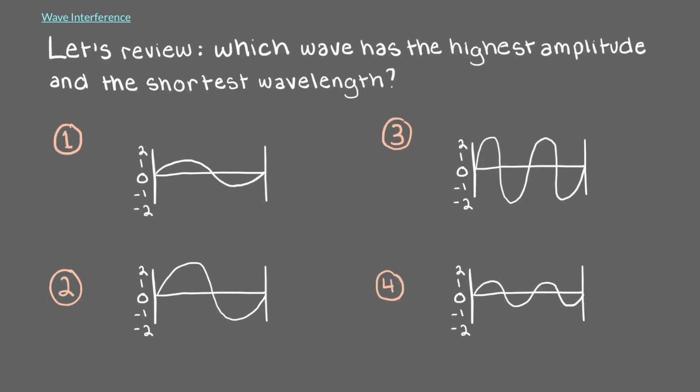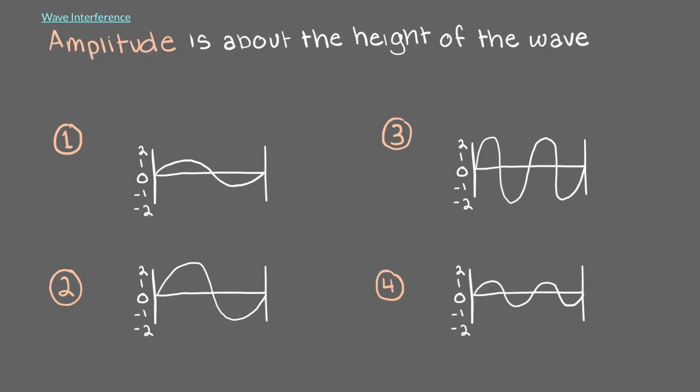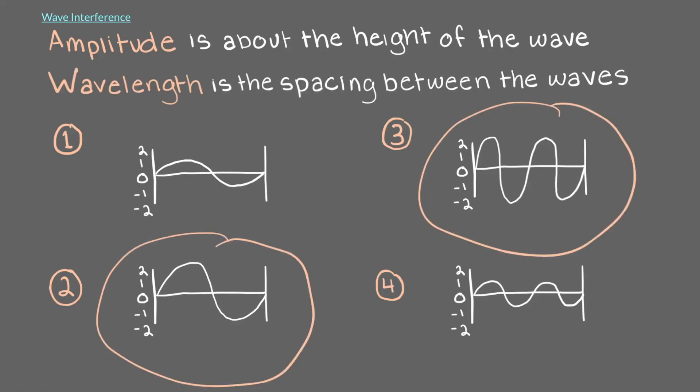Before we continue, let's review. Which wave has the highest amplitude and the shortest wavelength? Amplitude is about the height of the wave, maximum or minimum, and wavelength is the space between waves. These two waves have the same large amplitude, but this one has the shortest wavelength.